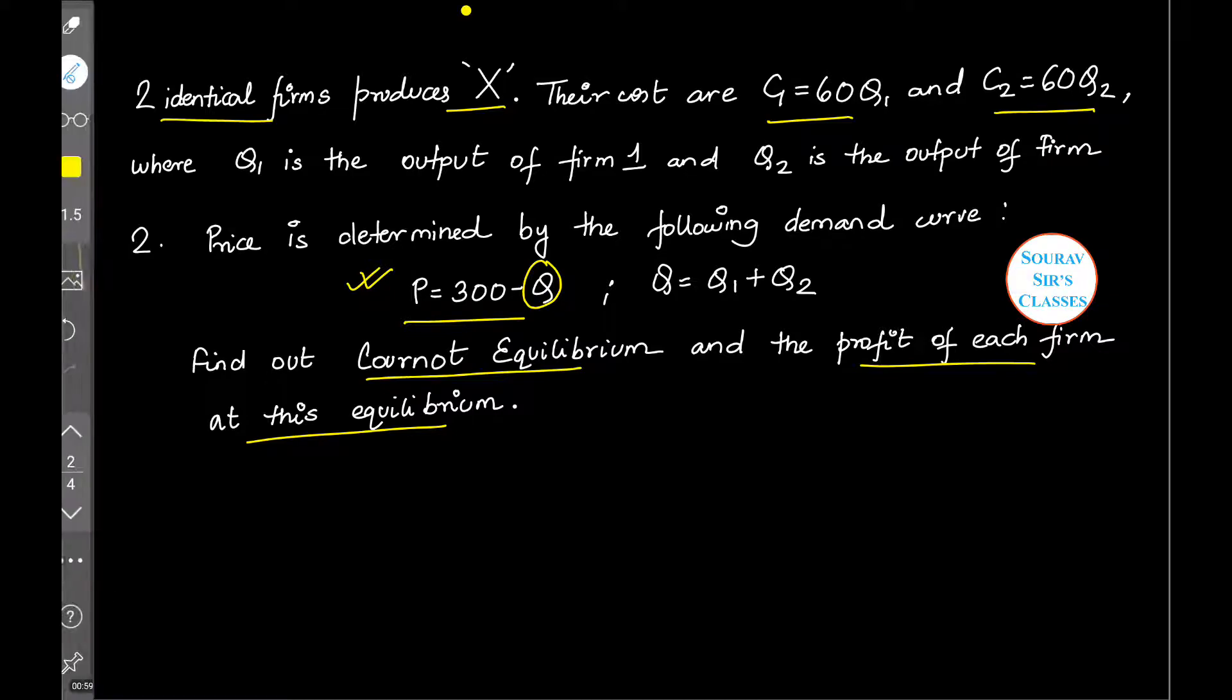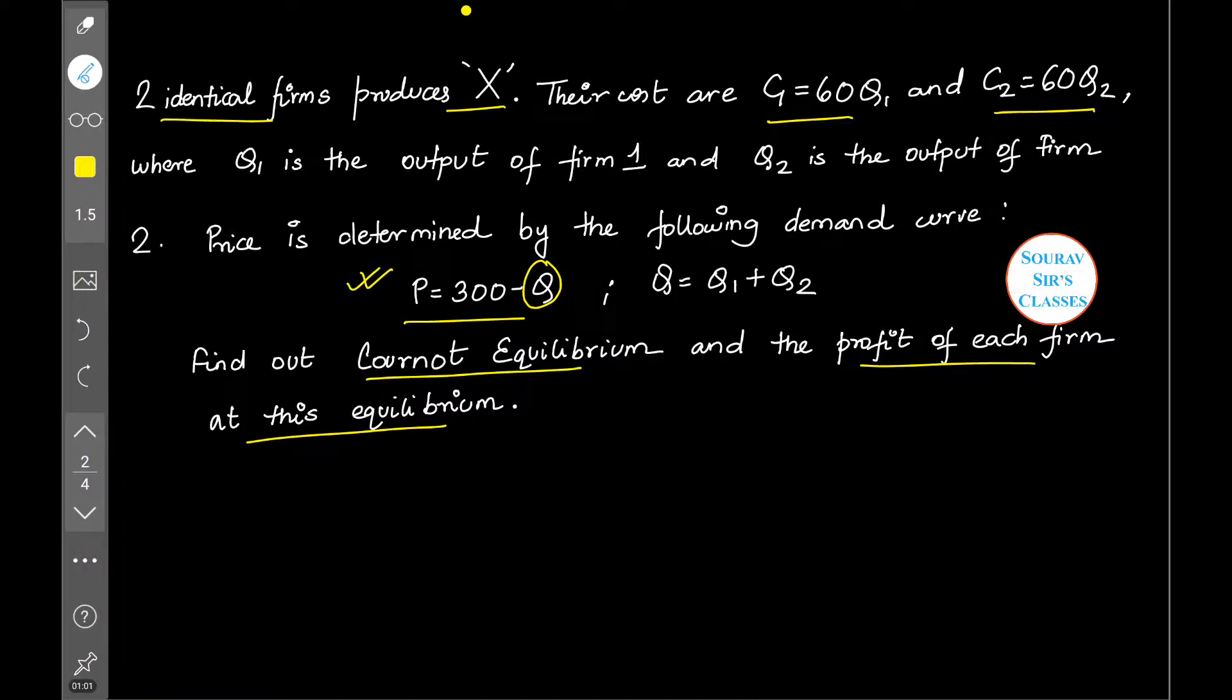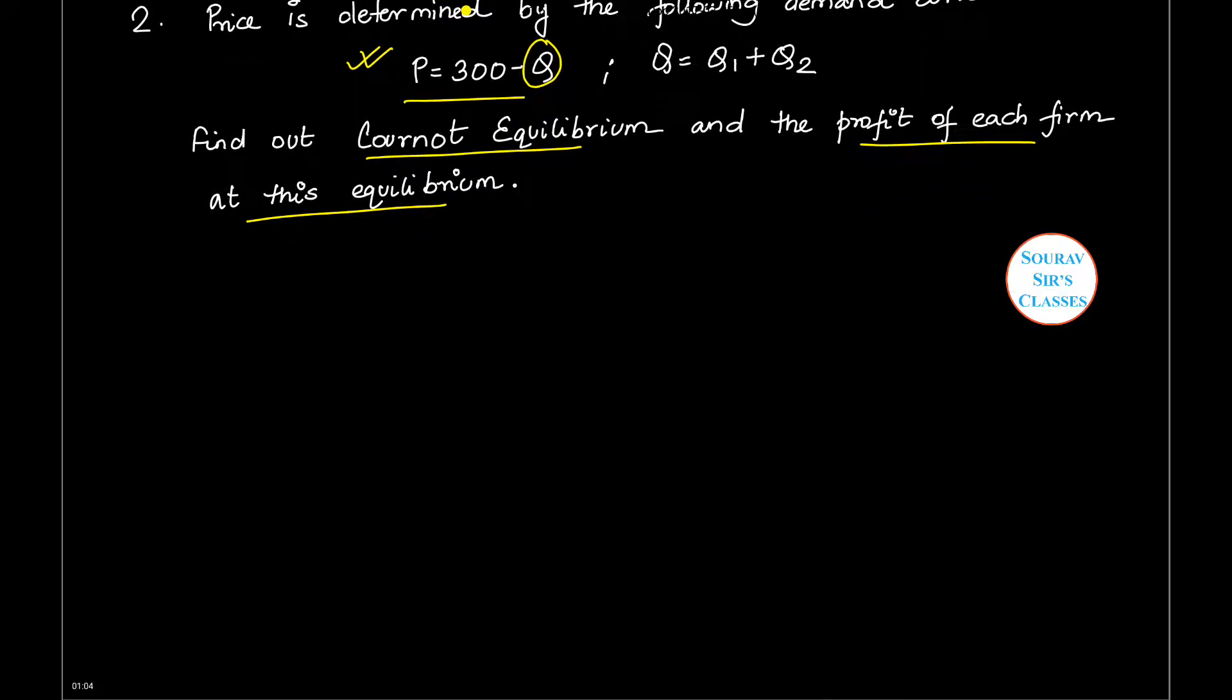Let's get started. We know that profit is given by total revenue minus total cost. So total revenue for firm one will be P into Q1, which is (300 - Q1 - Q2) into Q1. So this will be 300Q1 minus Q1 squared minus Q1Q2.